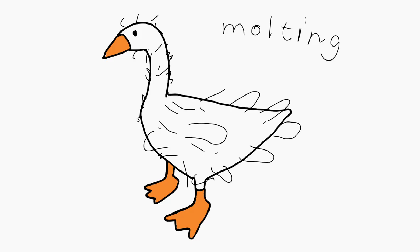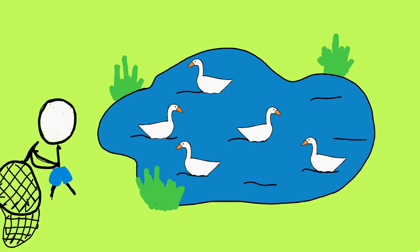Molting may only happen once a year, but during the molting season — for 30 to 45 days — a goose is rendered flightless. They become a sitting duck, or a sitting goose in this case. During this molting period, geese will camp out in open waters to protect themselves. So if you ever feel like kidnapping a couple of geese, wait for molting season to come around and bring a swimsuit. You'll probably also need a first aid kit for yourself, because kidnappees never come willingly.